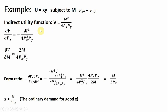To get the demand for good x from this indirect utility function, we're going to take a couple of partial derivatives. I will take the partial derivative of this expression with respect to the price of good x, which gives us the following result. I will also take the partial derivative of the indirect utility function with respect to income and we'll get that result.